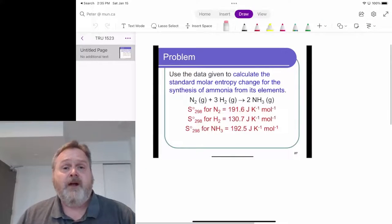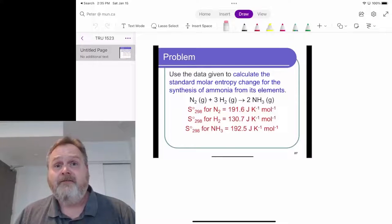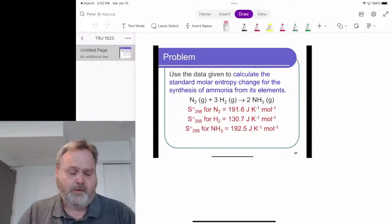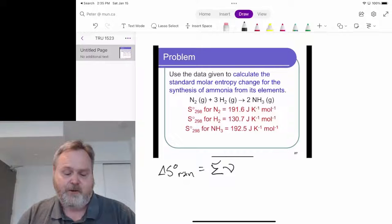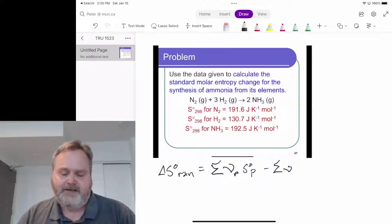But the solution for this problem is essentially a variant of Hess's law. What we're going to find is that the delta S° for this reaction at 298 Kelvin is going to be the sum of the stoichiometric coefficients of the products times the S° for each product, and from that we're going to subtract the sum of the stoichiometric coefficients of the reactants times the standard entropy for each reactant.